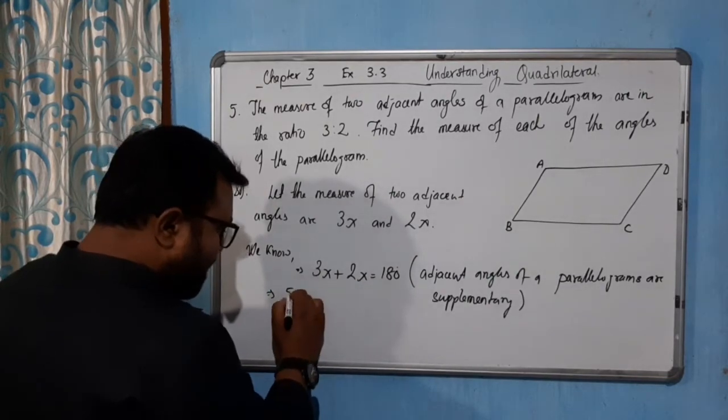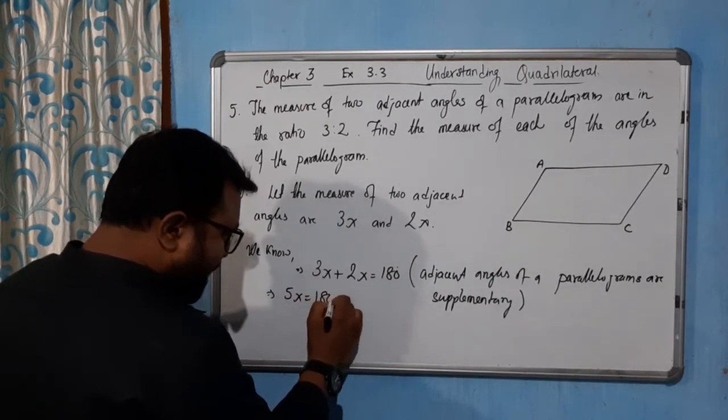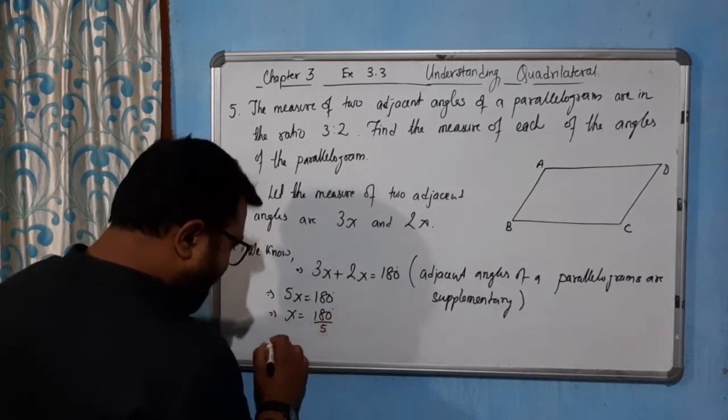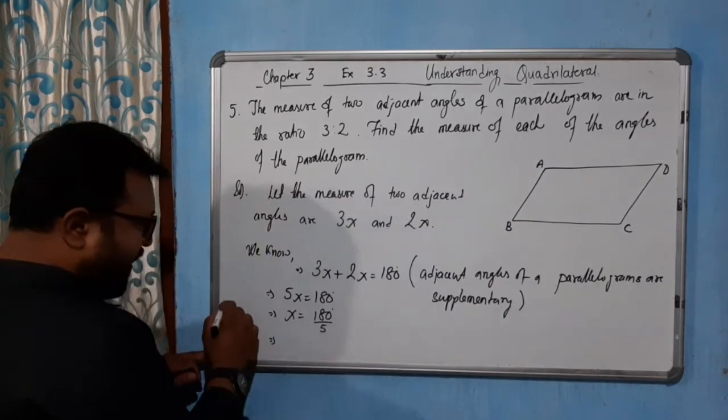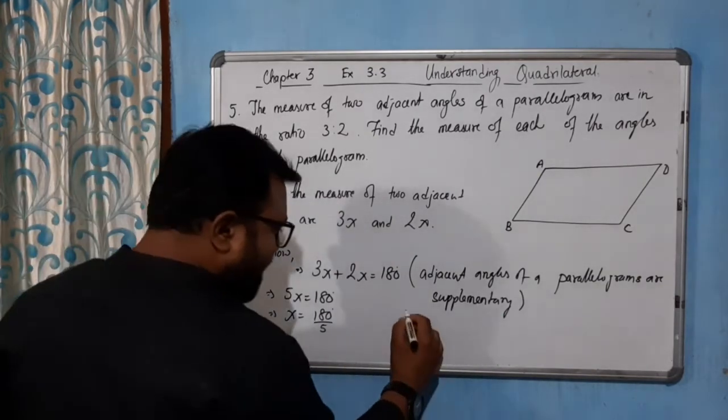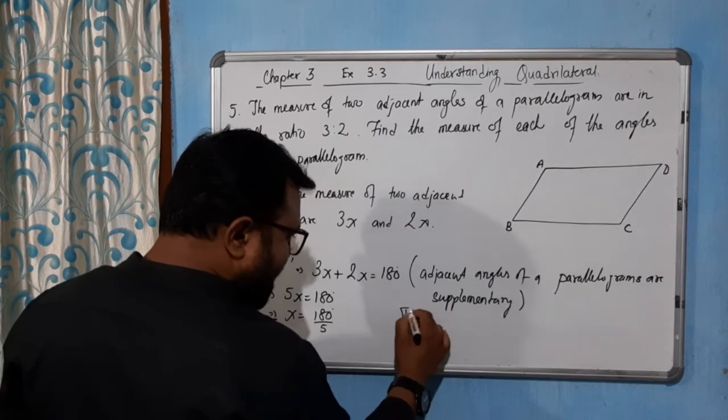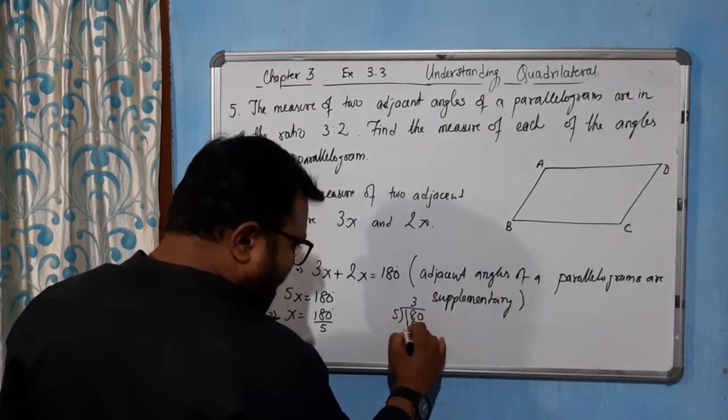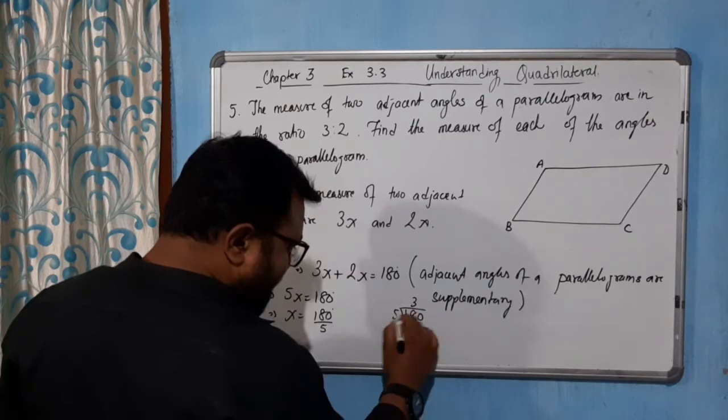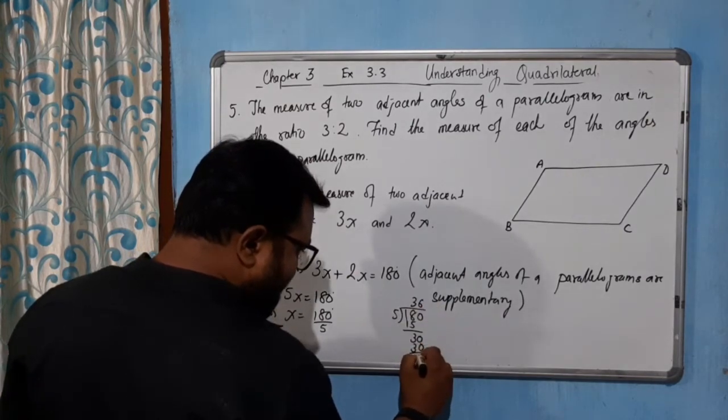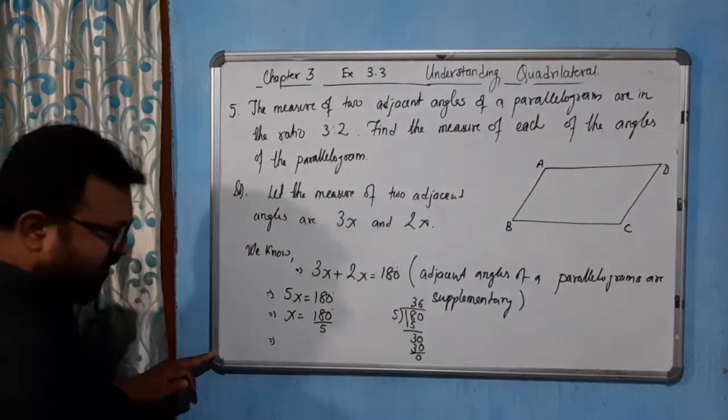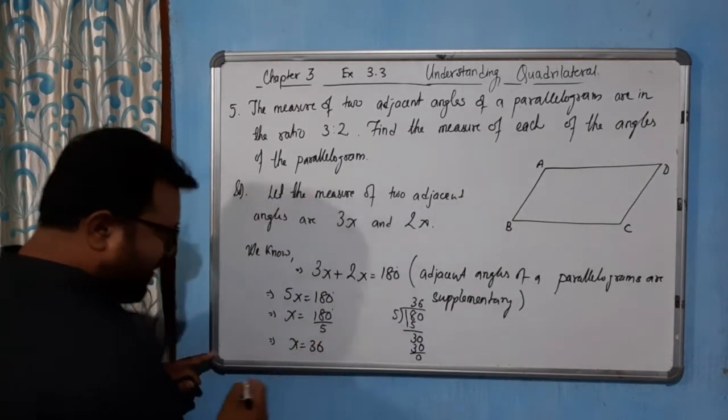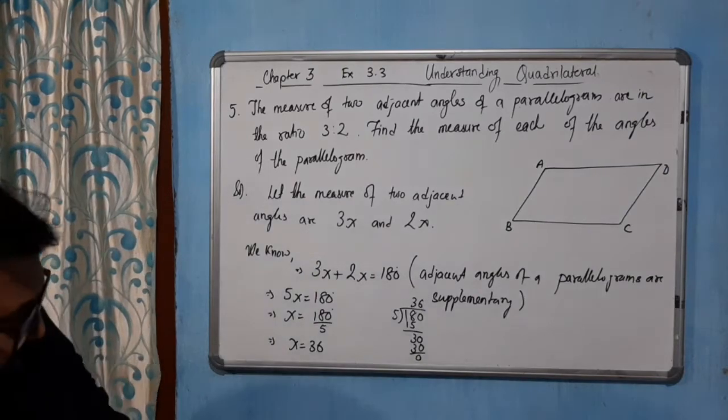So x equal to how much? 180 degrees divided by 5. How much will you get? It's very simple. Let me divide here: 180 divided by 5. 5 into 15 is 3, 5 into 30 is 6, zero. So 36 degrees. So you will get x equal to 36.